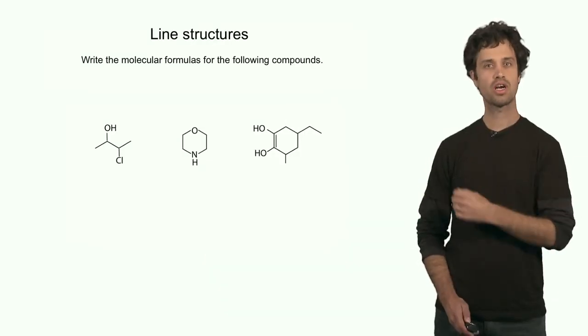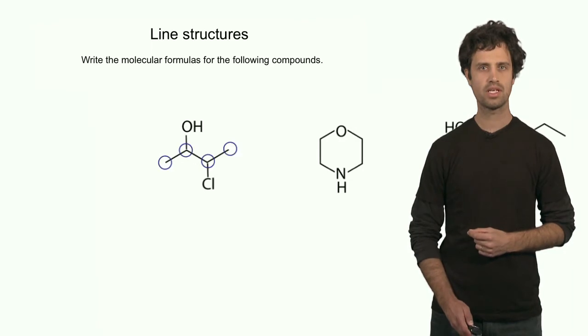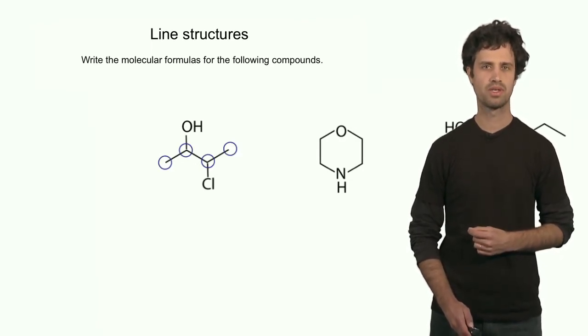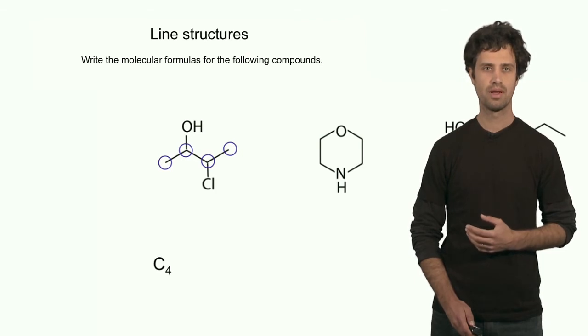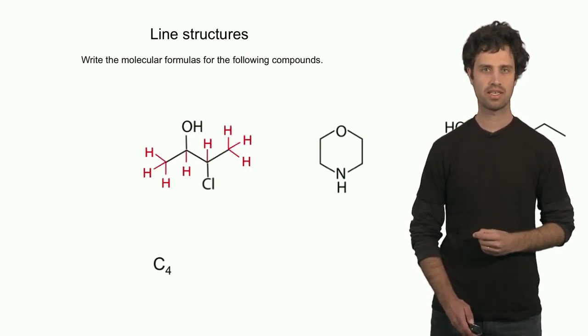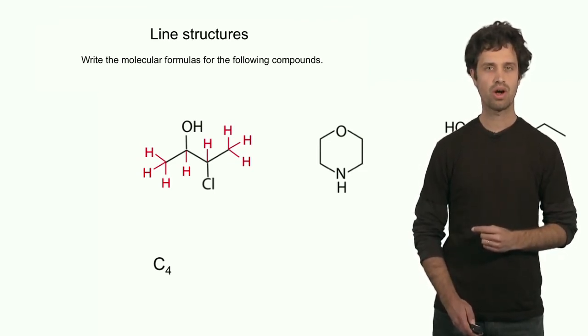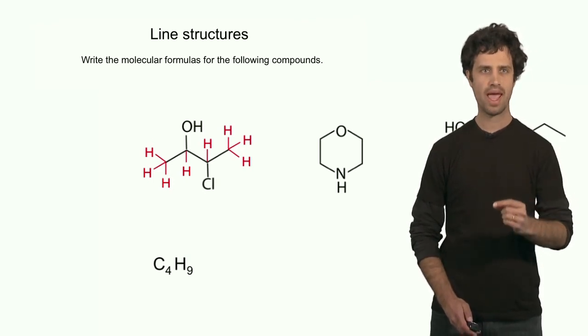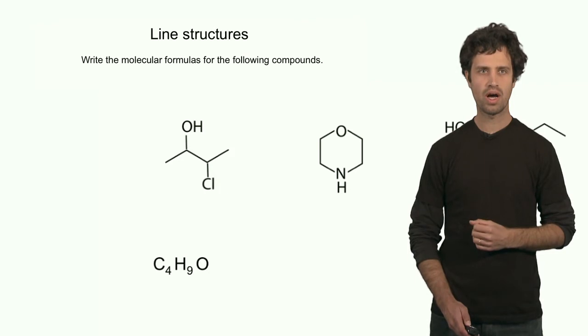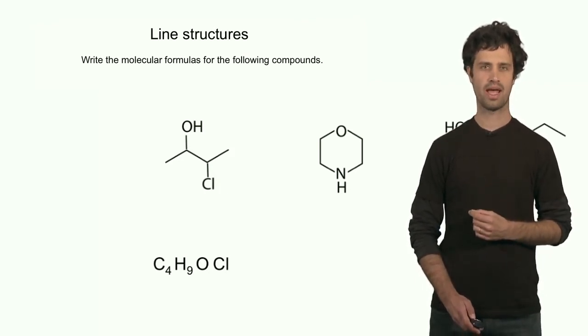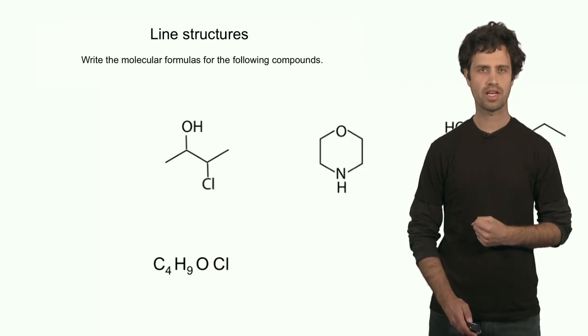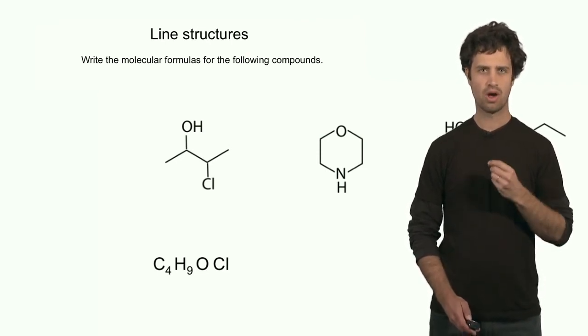From the line structures we can also determine the molecular formulas. We have to count the number of atoms of each element. Starting with the example all the way to the left: this structure has a total of four carbon atoms, so we write C4. It has a total of eight hydrogen atoms bonded to carbon, plus one more hydrogen bonded to an oxygen, giving nine hydrogens total. It also has one oxygen and one chlorine atom, so the molecular formula is C4H9OCl.